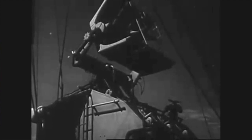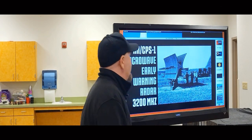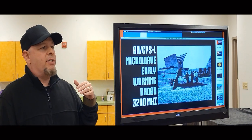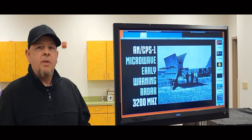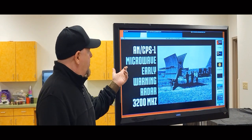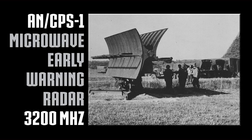Any radar operators running centimetric radars were noticing this. What would happen was these guys would aim their radars at the outer disk of the sun at sunup and sundown and get all of this noise — it sounded really cool, and they called it sun strobing. Here's one of the microwaves that operates in that area — the AN/CPS-1 — this was a microwave early warning radar that operated at 3,200 megahertz, S-band, and was semi-mobile, so they could use it in different locations for early warning systems.